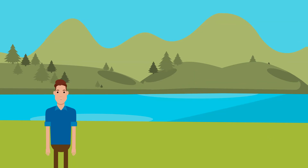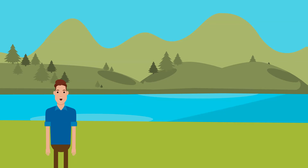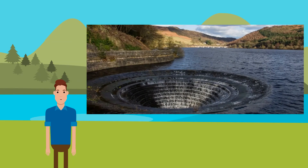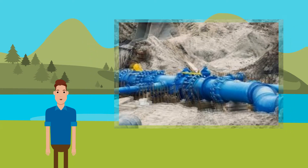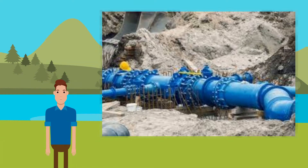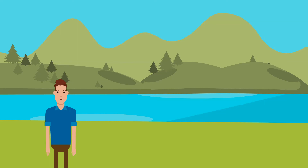Rainfall is highest in winter, but the greatest demand for water is in the summer. Satisfying water demand is not easy. As well as maintaining supply, water companies have to ensure supplies are sustainable and do not damage the environment. They can increase water reserves by building more reservoirs, and water can be transferred from areas of plenty to areas of shortage. Conservation measures include plugging leaks in water distribution and metering water usage.